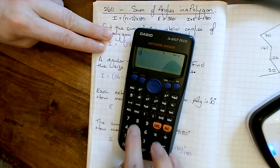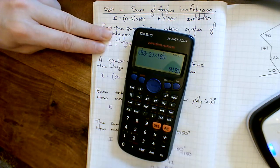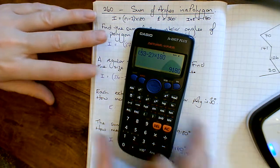Let's have a look. 53 sides take away 2 times by 180 equals 9180, which is what I was working towards. Okay, so that's all the wordy questions.